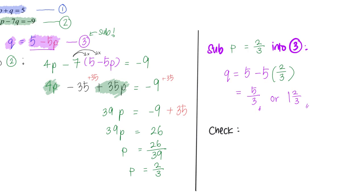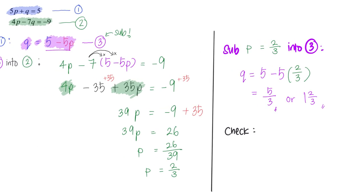We are going to substitute these values of P and Q back into equations 1 and 2. So equation 1 will be 5P - P is 2 over 3 - plus Q - Q is 5 over 3. Press calculator: does this give me 5? Yes it does, so correct.